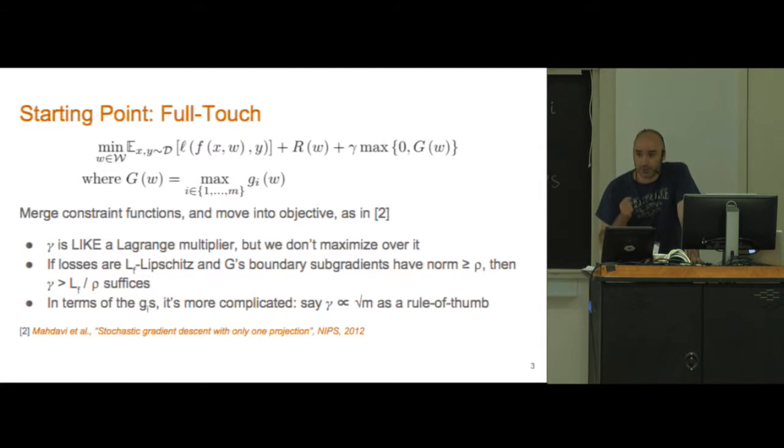We're assuming that you're giving us a gamma which is large enough to guarantee that we'll converge to a solution which is an optimal solution to the problem on the previous slide.